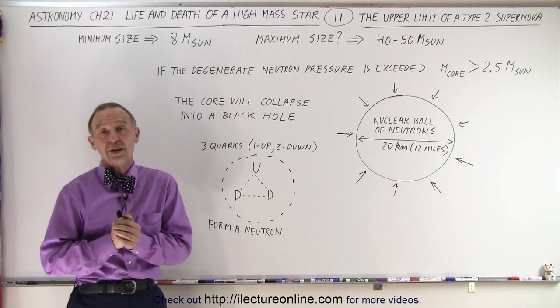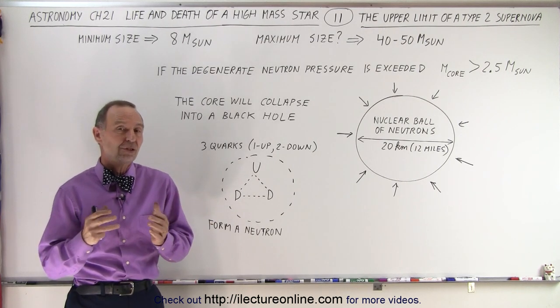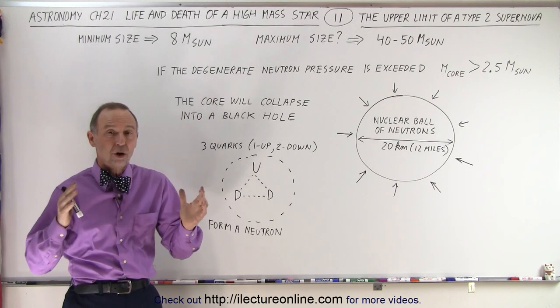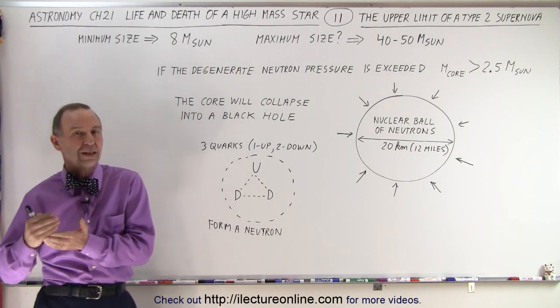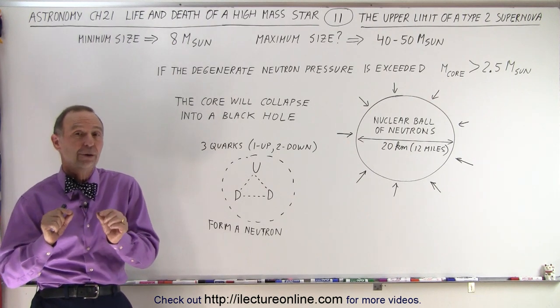We might have wondered, is there actually an upper limit to this? And actually, there is. When the supermassive star has a mass of about 40 to 50 times the mass of the sun—now those are very, very rare stars.